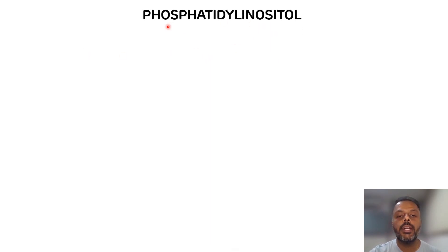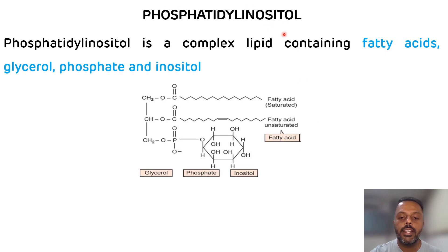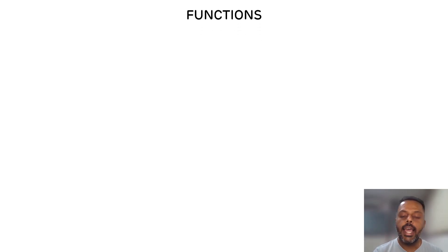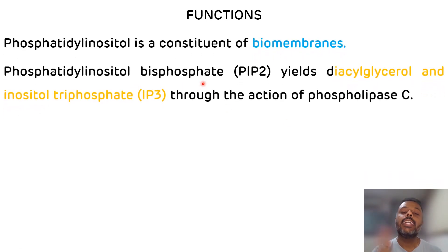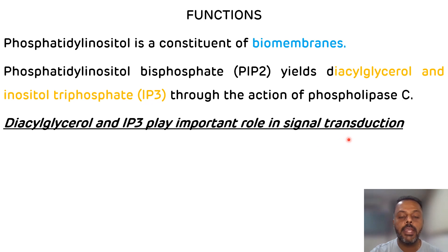Another glycerophospholipid is phosphatidylinositol, composed of glycerol, fatty acid, phosphate, and inositol as a nitrogenous base. The significance of phosphatidylinositol is that it is important for the synthesis of biomembranes. Additionally, phosphatidylinositol gives rise to the synthesis of diacylglycerol (DAG) and inositol triphosphate through the action of phospholipase C. This diacylglycerol and inositol triphosphate act as signal messengers and play an important role in signal transduction.